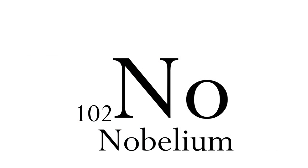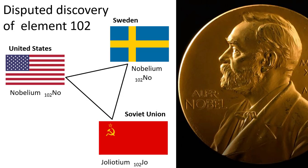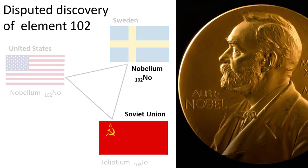102 is Nobelium, named after Alfred Nobel. The element is made by colliding lighter atoms in a cyclotron particle accelerator. You can make the Nobelium-255 by bombarding a Californium target with a stream of carbon-12 nuclei.